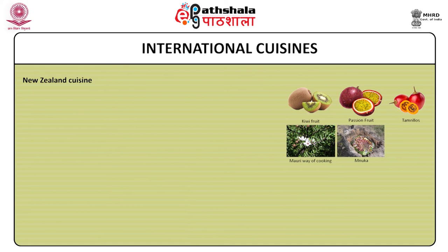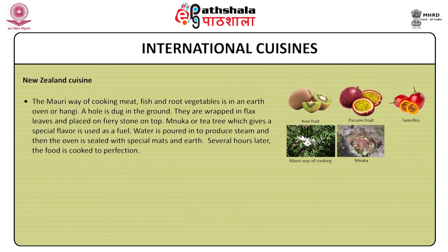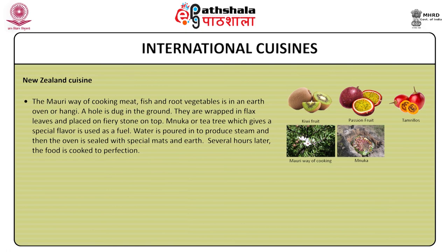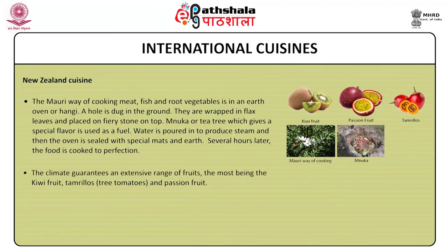New Zealand cuisine: marinated raw fish is common in New Zealand. The Maori influence is seen in New Zealand cuisine. The Maori way of cooking meat, fish and root vegetables is in an earth oven or hangi. A hole is dug in the ground, food is wrapped in flat leaves and placed on fiery stones. Manuka or tea tree, which gives a special flavour, is used as fuel. Water is poured to produce steam and then the oven is sealed with special mats and earth. Several hours later the food is cooked to perfection. The climate guarantees an extensive range of fruits, most notably kiwi fruit, tamarillo or tree tomatoes and passionfruit.